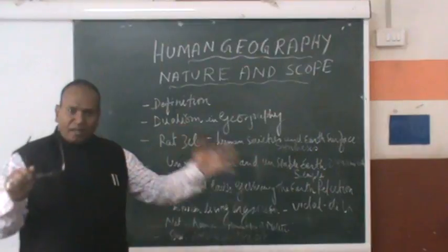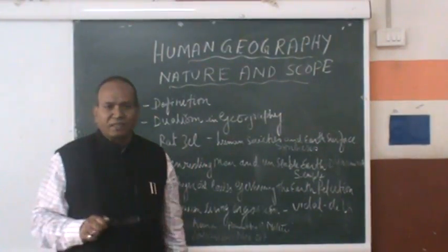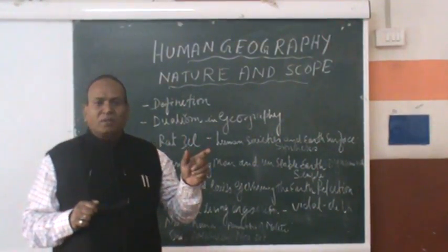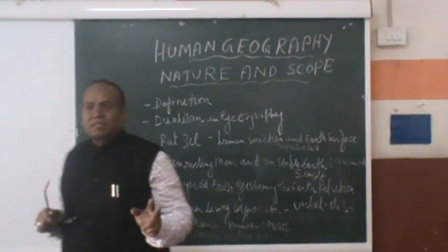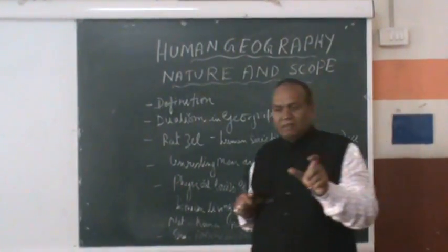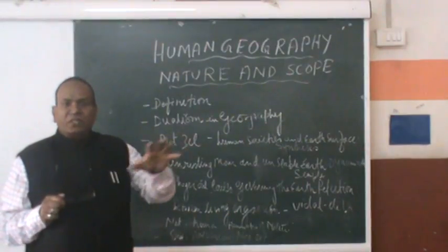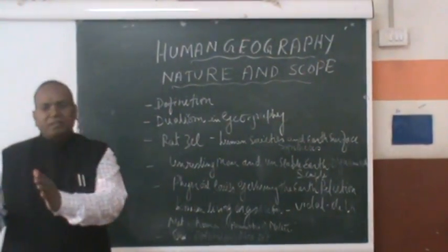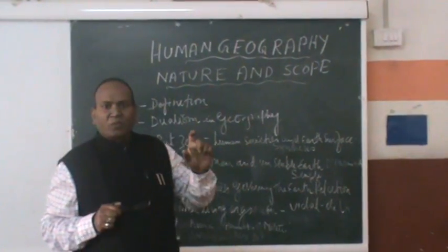When we want to understand human geography in totality, it talks about the study of the relationship between man and the surface of the earth, and different activities associated with that. As we proceed further, we talk about geography as a discipline — there is a dualism in geography, which reflects a difference of opinion among geographers. There are two approaches: geography is either law-making or nomothetic in its approach, or idiographic, meaning descriptive. The conclusion is that we need a blend of both.